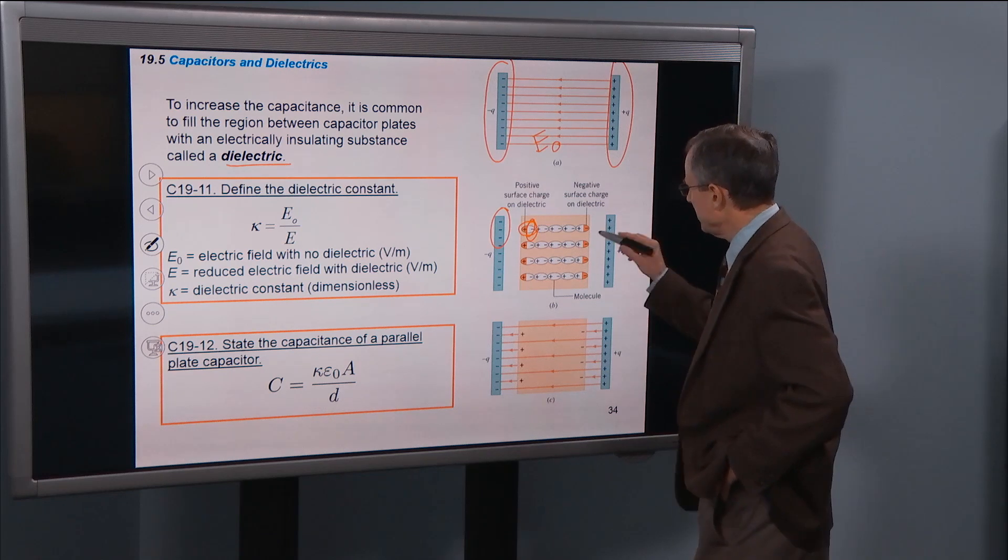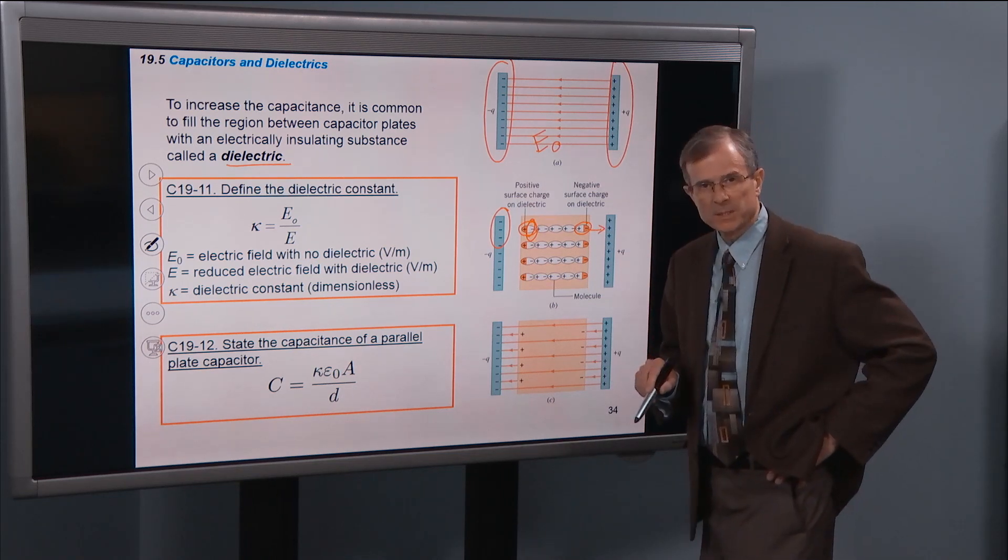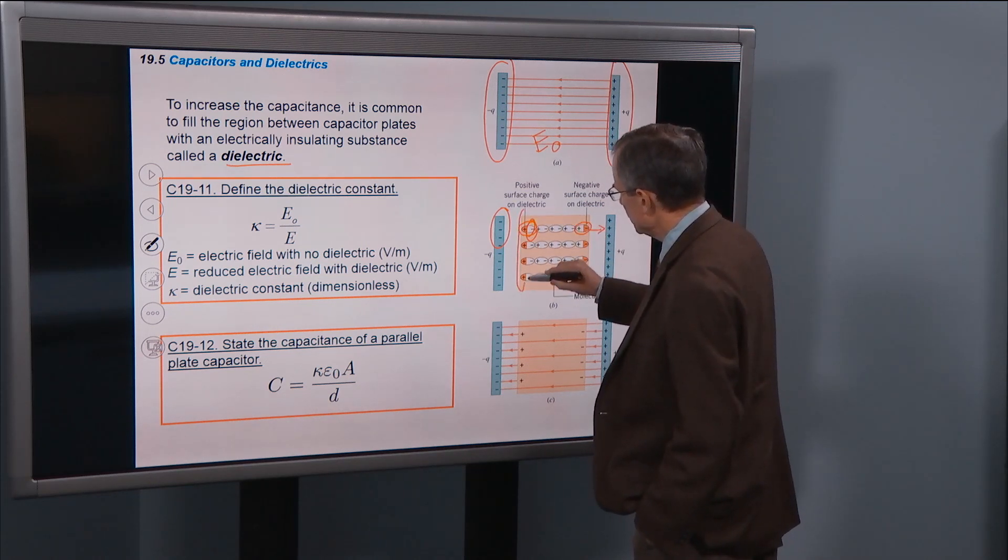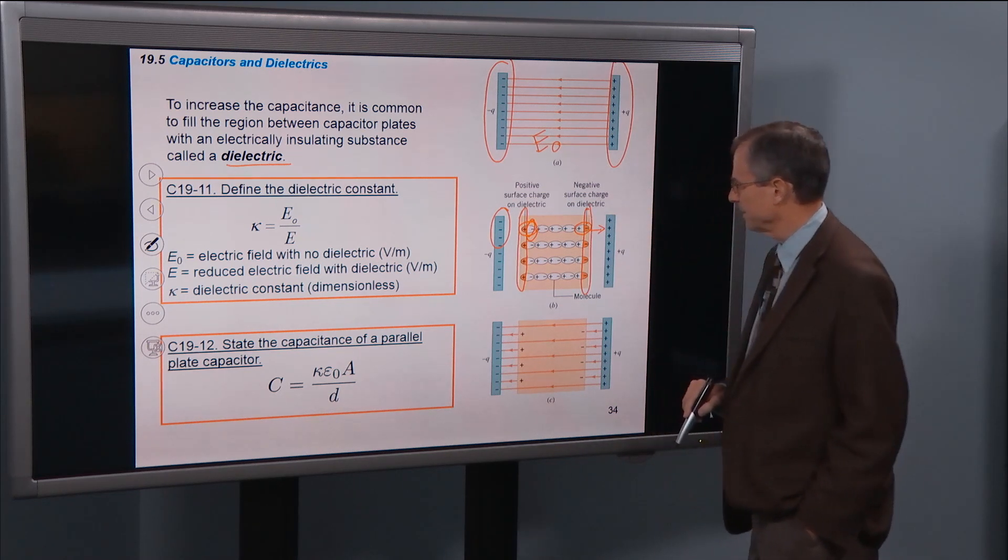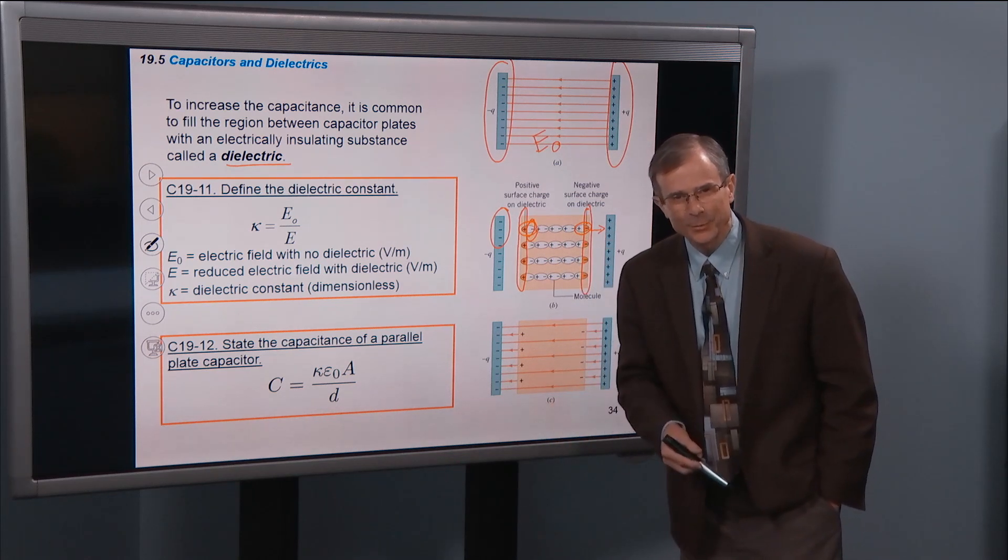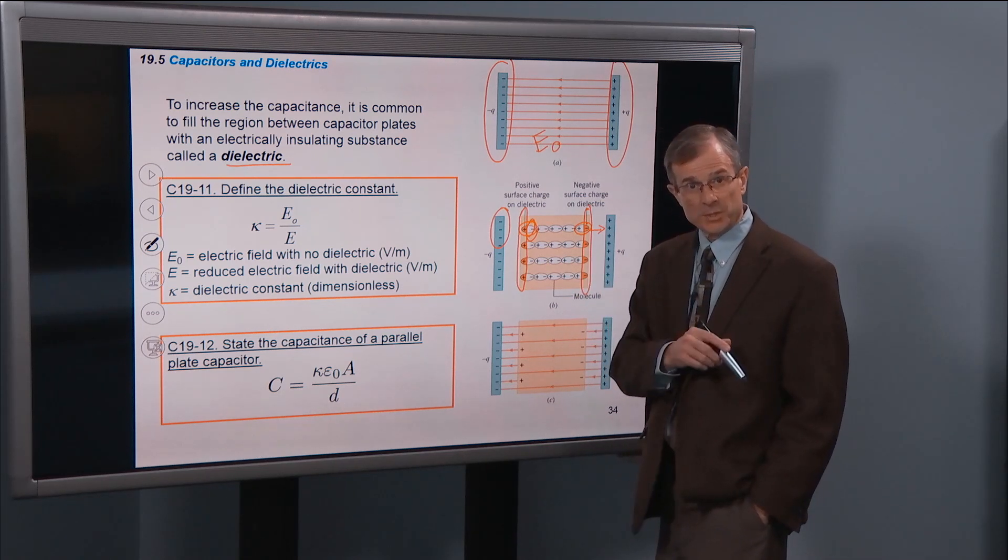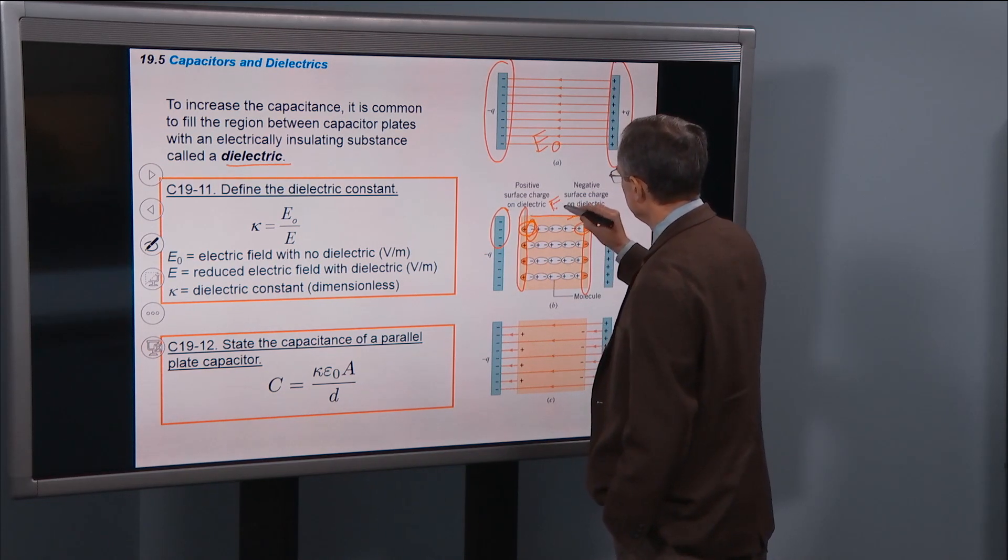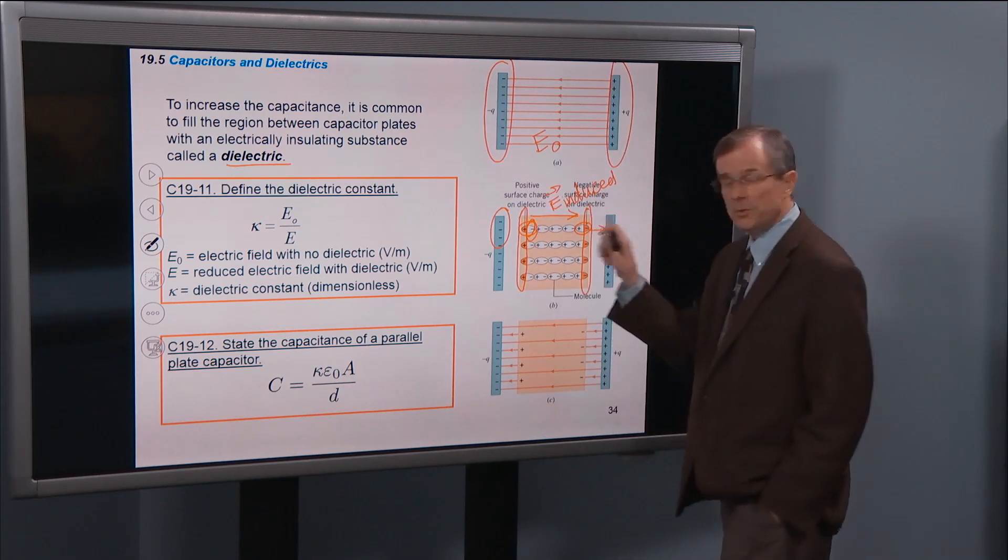It polarizes the material. Same thing over here. The electrons in this atom will get attracted toward the positive plate. Well, what does that do? That leads to a positive amount of charge along the surface here, and a negative amount of charge along this surface. Well, if you think about that charge itself creating its own electric field, what would the direction of that induced electric field be? Well, electric fields always start on positive and end on negative. So the induced electric field would be to the right.